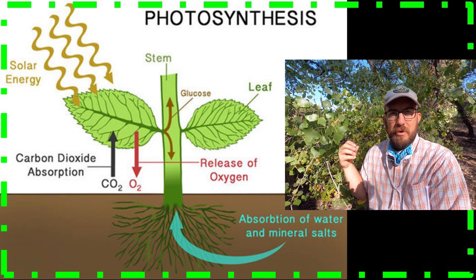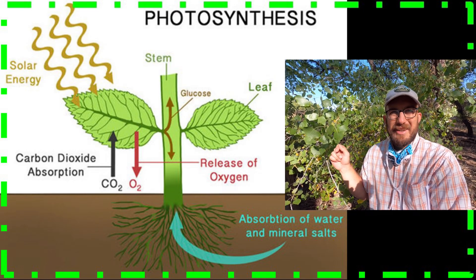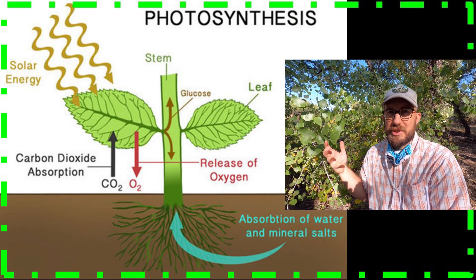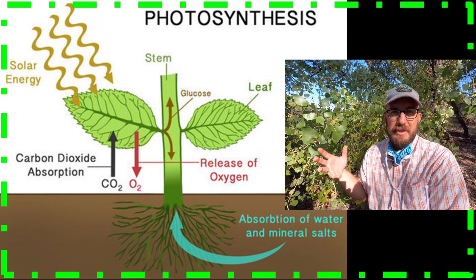Those two things combined, solar energy breaks them apart and reforms them into O2, oxygen, and C6H12O6, or starch, carbohydrates, glucose, sugars. And that's it.